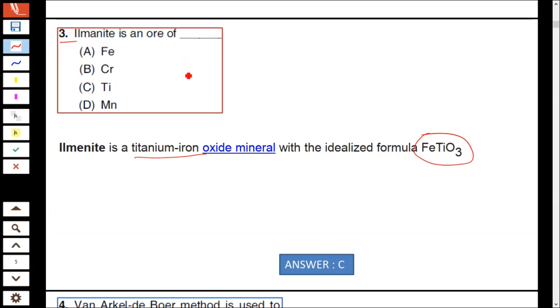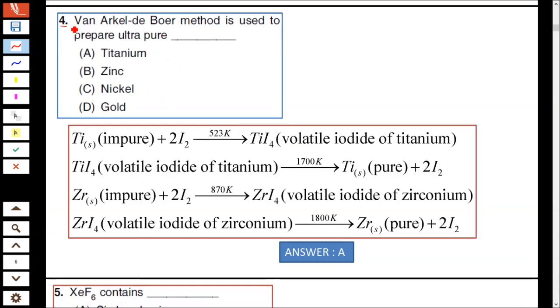Question number 4: Van Arkel-Boer method is used to prepare ultra-pure... The purification of van Arkel method is used to purify impure titanium or zirconium. Impure titanium or zirconium with iodine vapors are passed on sublimation, it gives TiI₄, titanium tetraiodide. Similarly, you can purify impure zirconium to volatile pure zirconium. Hence van Arkel method was used to purify titanium and zirconium.